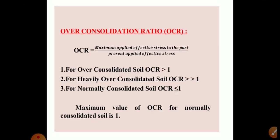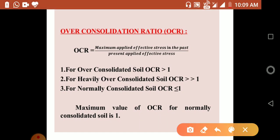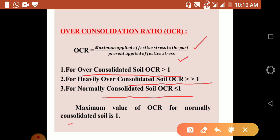The over-consolidation ratio (OCR) is defined as the maximum applied effective stress in the past divided by the present applied effective stress. For over-consolidated soil, OCR > 1, and for heavily over-consolidated soil, OCR >> 1. For normally consolidated soil, OCR ≤ 1, with a maximum value of 1.